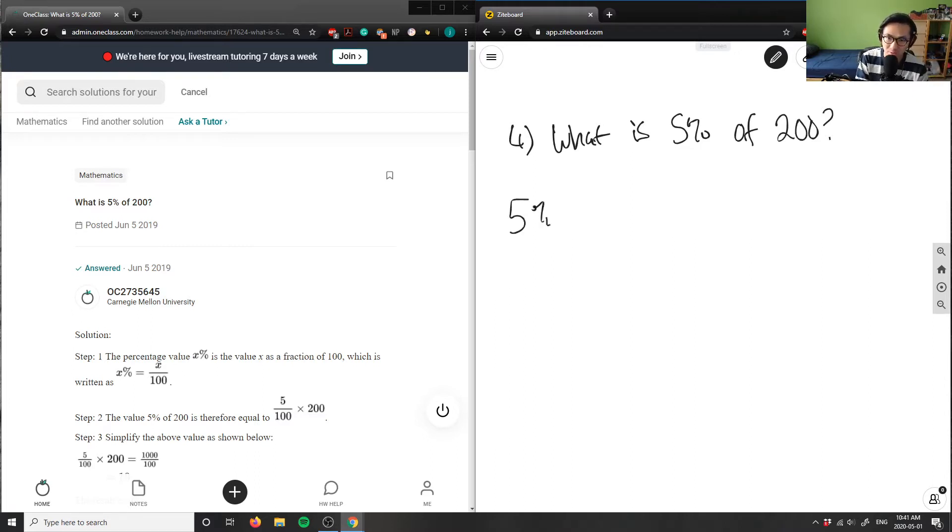So 5 divided by 100 equals 0.05. I simply move the decimal place two places behind the 5.